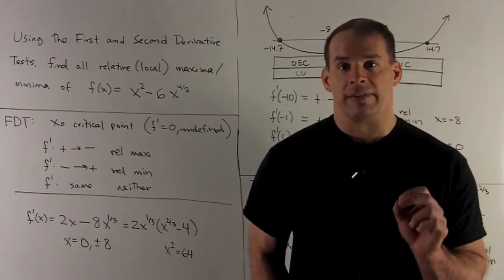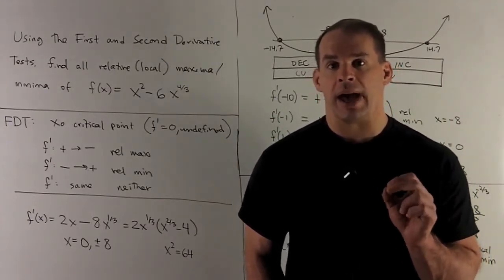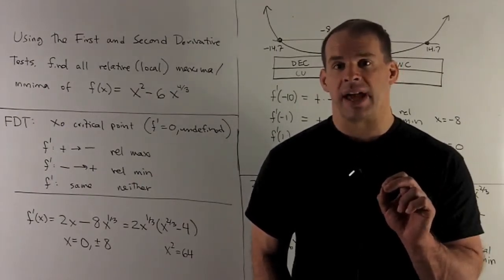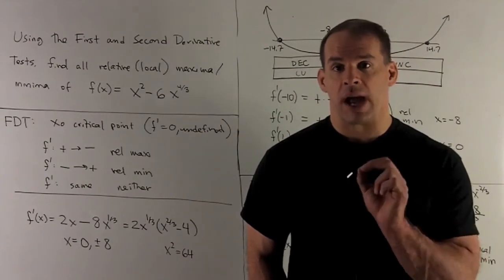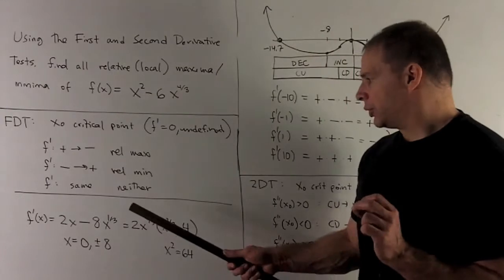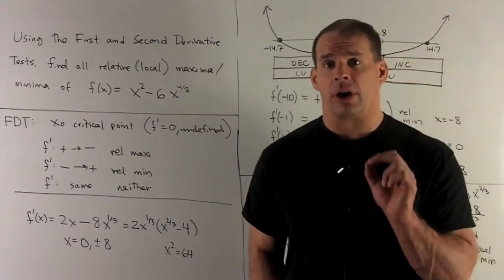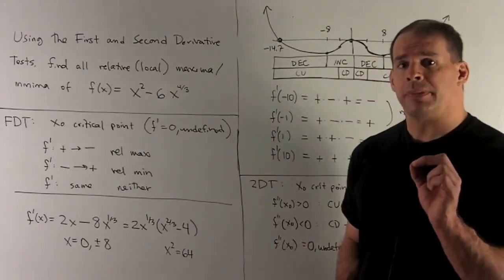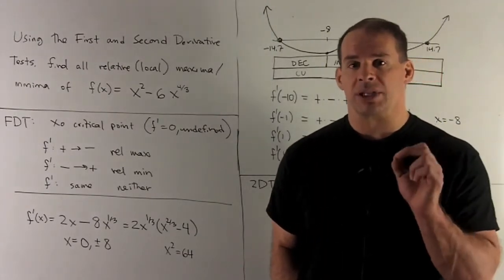Let's take our derivative and look for critical points. We're going to have 2x minus, bring the exponent down, it's four-thirds, that's going to turn to an 8. Then we subtract 1 off the exponent. So I'm going to have 2x minus 8 times x to the one-third. I can factor out an x to the one-third and a 2, leaving me with x to the two-thirds minus 4.